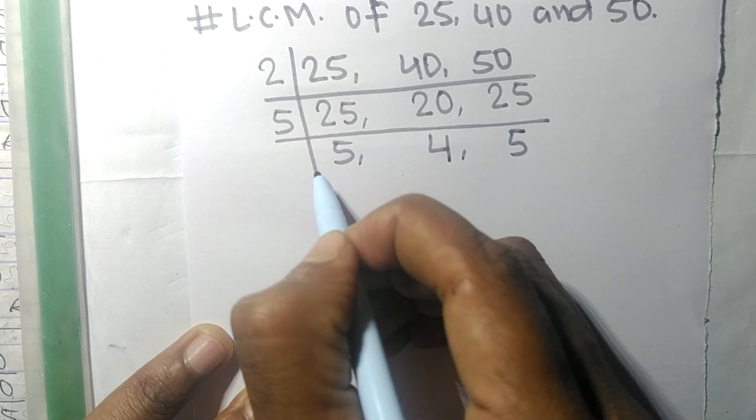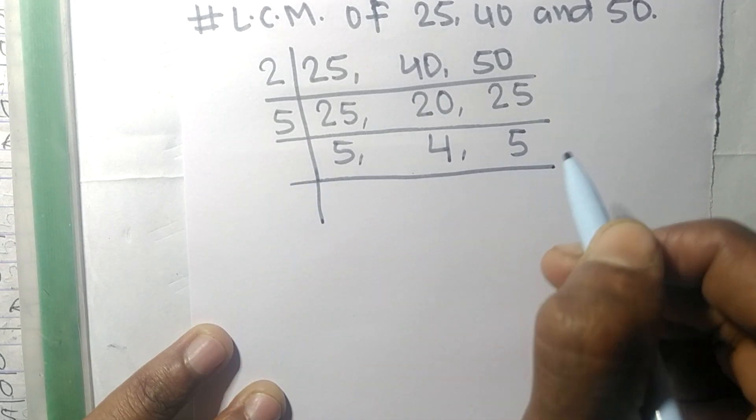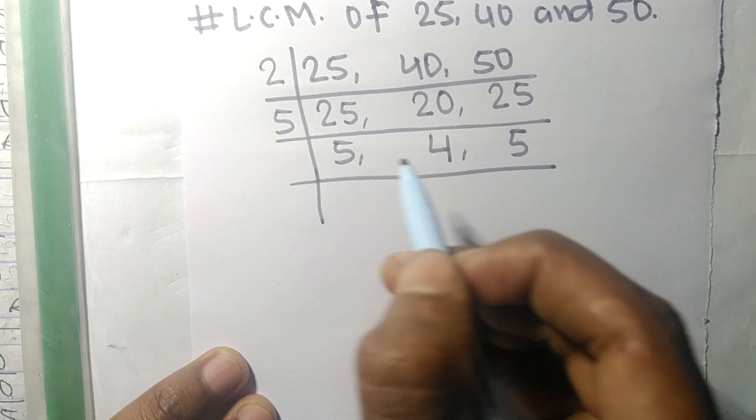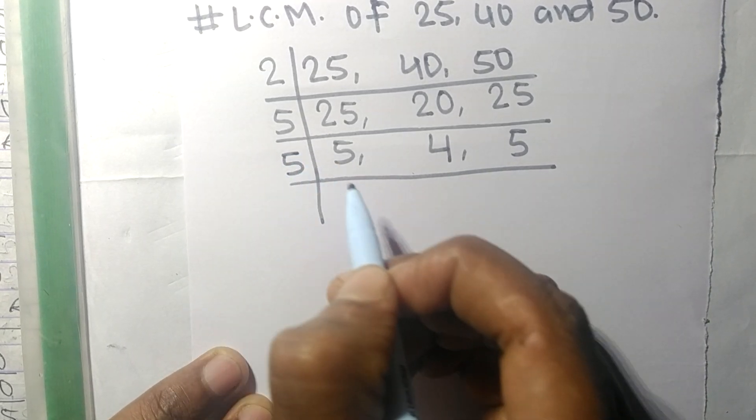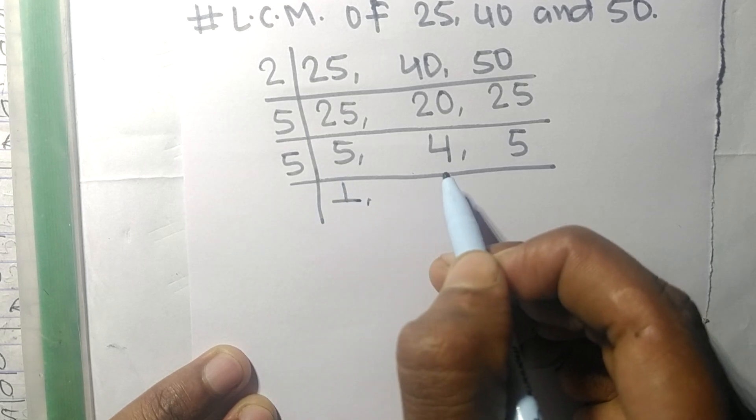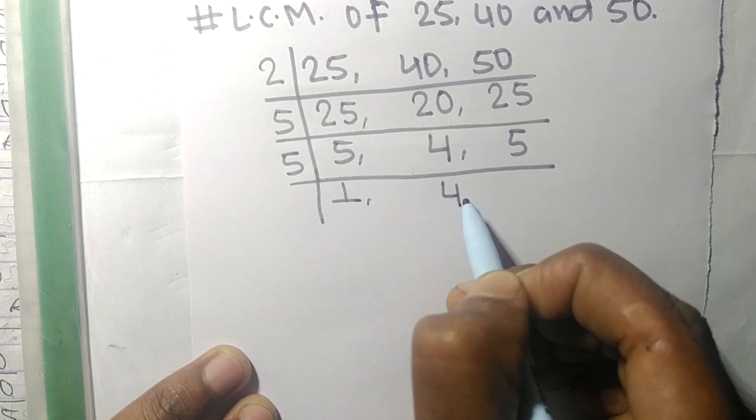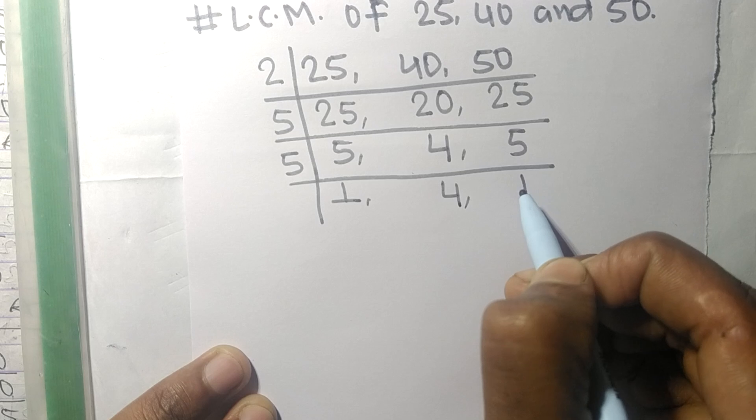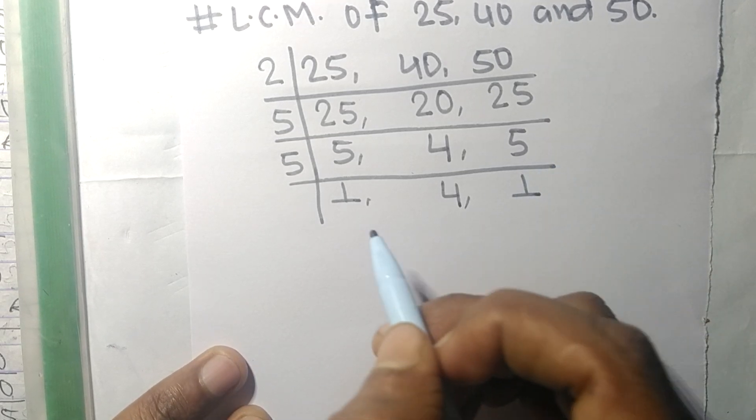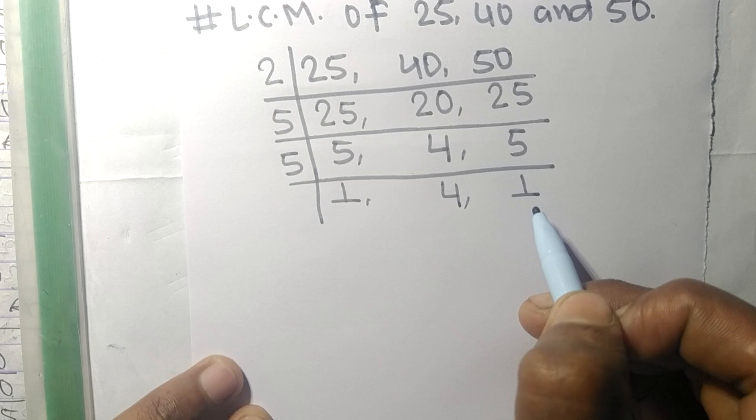So now these both 5s are exactly divisible by 5. So 5 times 1 means 5, 4 is not divisible so it is same, 5 times 1 means 5.